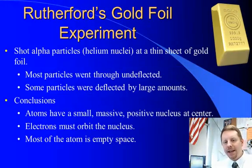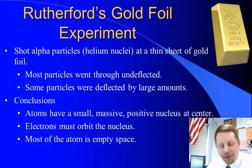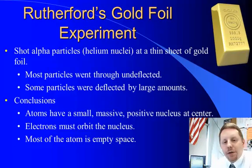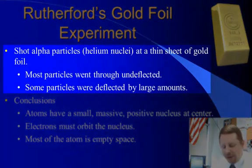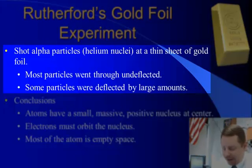So let's begin by looking at the work of New Zealand physicist Ernest Rutherford. Rutherford performed a famous experiment known as Rutherford's Gold Foil Experiment in which he shot alpha particles, also known as helium nuclei, at a very thin sheet of gold foil. Most of those particles went through the gold foil undeflected, but a significant number were deflected by large amounts, and that led him to some very important conclusions.